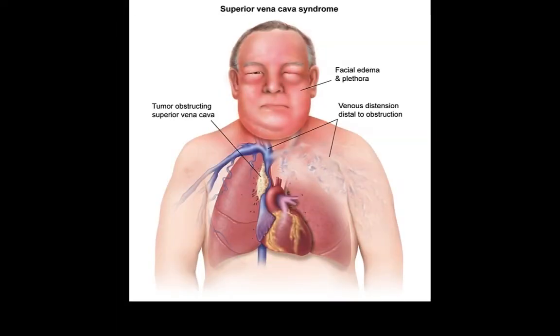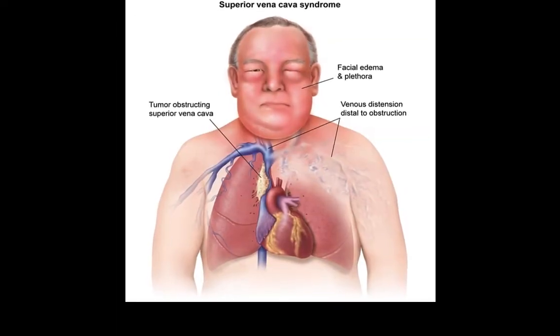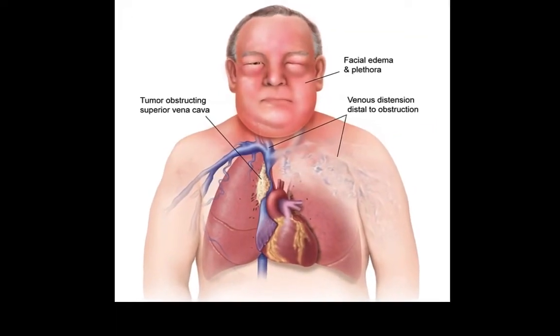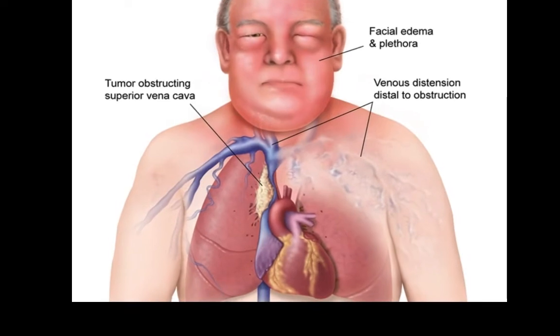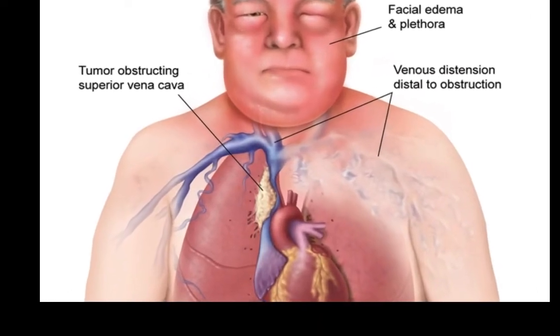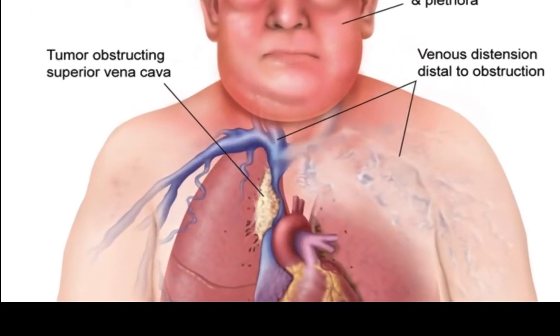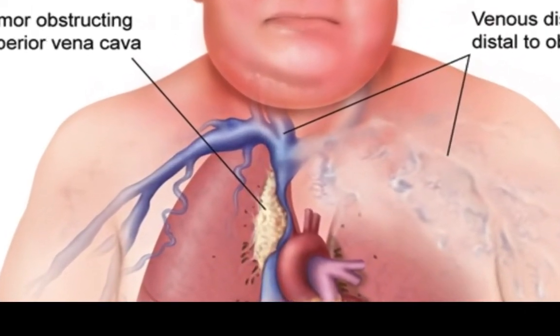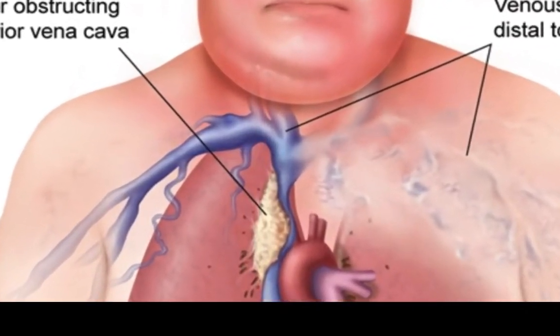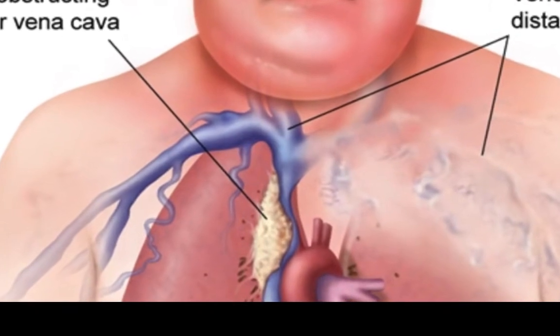The superior vena cava is the major vein that drains the head and upper limbs. It is formed by the union of the right and left brachiocephalic veins behind the first rib, and descends to enter the right atrium.